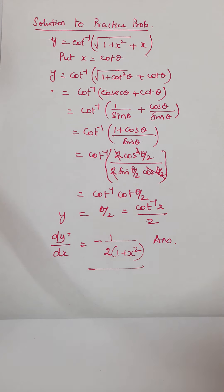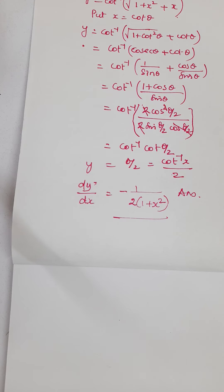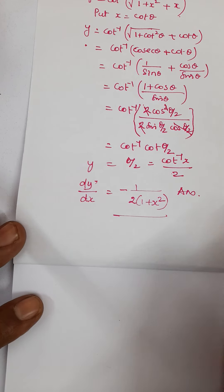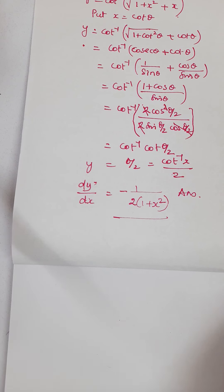Differentiating, you get 1 over 2 times root of 1 plus x squared. A very simple problem — you would have done it properly. It takes about 1 to 1 and a half minutes.